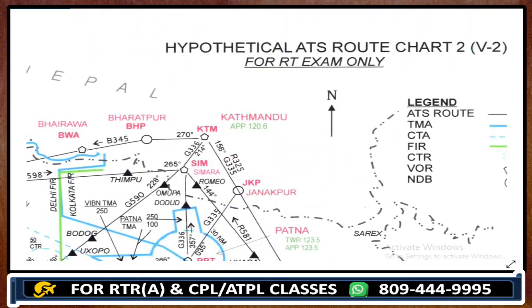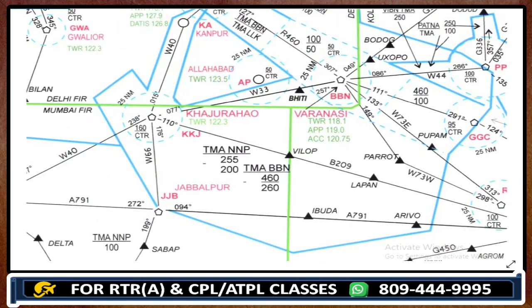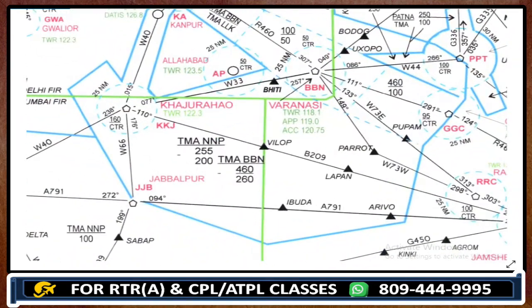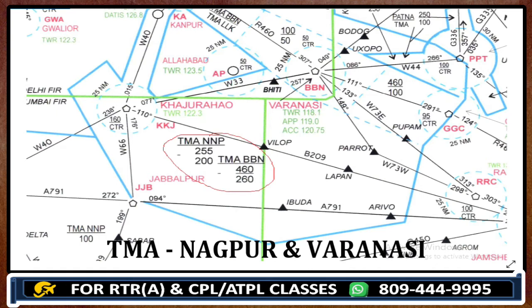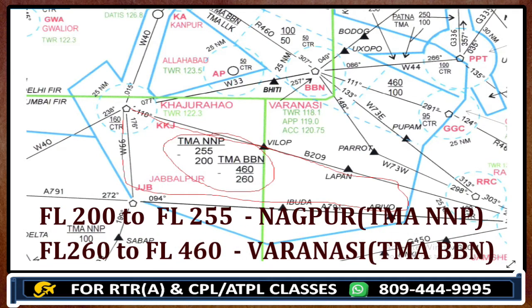This is chart number 2. In this chart, let me give you an idea — look over here. This is TMA Nagpur and TMA Varanasi. This complete area: whenever you are flying in this area, from flight level 200 to flight level 255 you would call Nagpur control, and from flight level 260 to flight level 460 you would call Varanasi control. So the area is the same, but it is vertically separated.